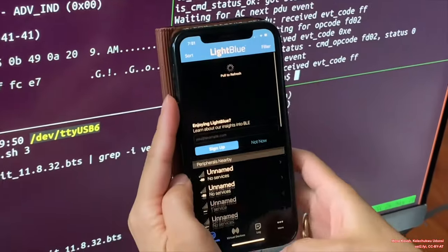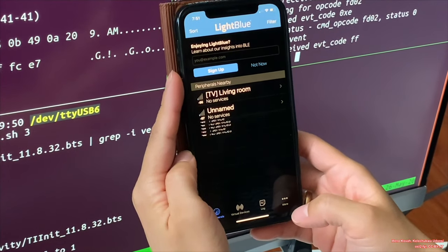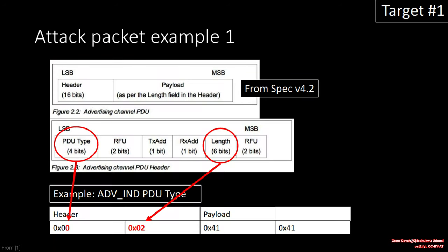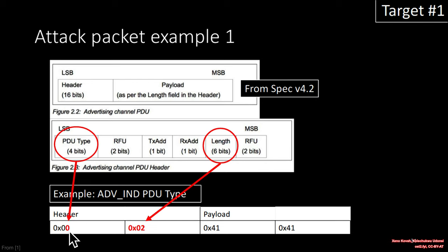When I scan nearby devices again, you see Pond — but this victim is supposed to be scanning only. To understand this vulnerability, we have to look at the type of Bluetooth low energy packets being sent. The specification talks about advertising channel portable data units, saying there's a 16-bit header followed by a payload.